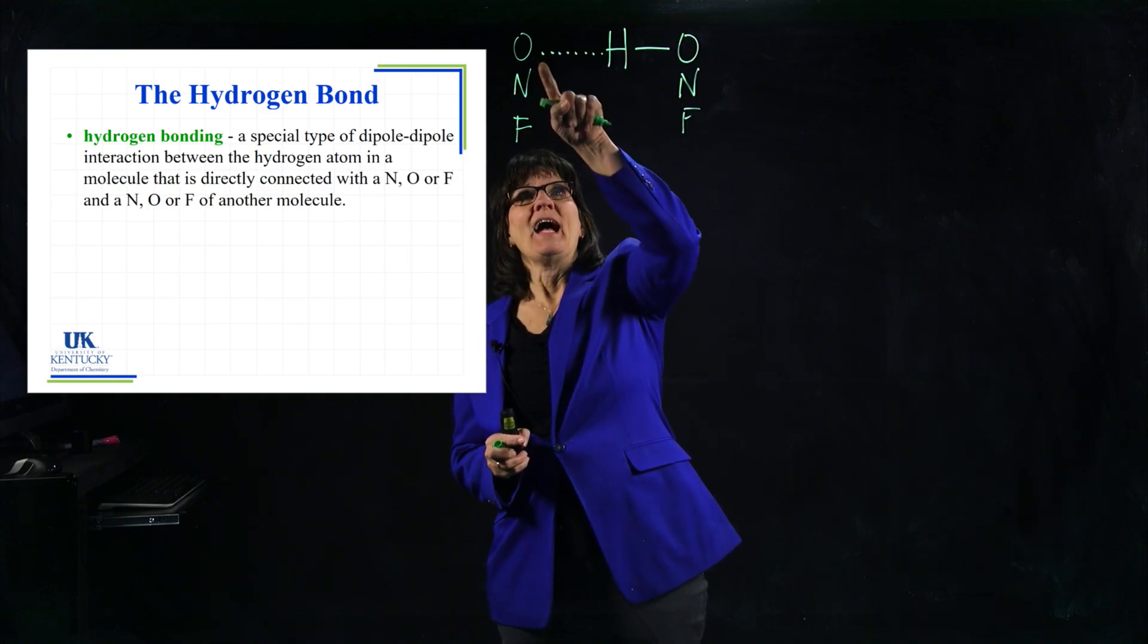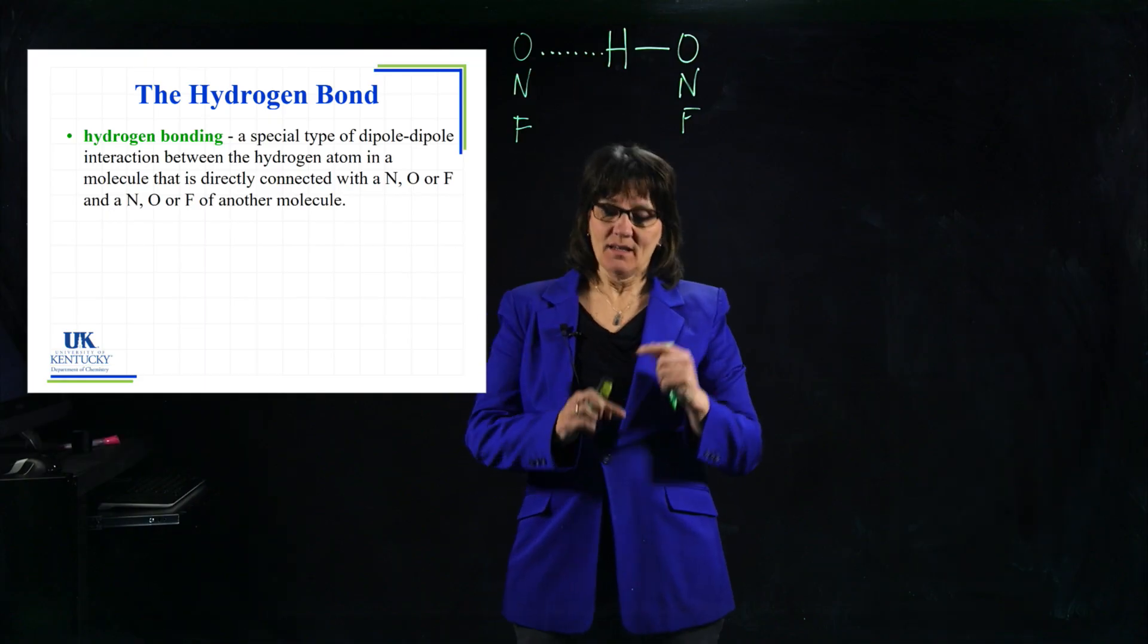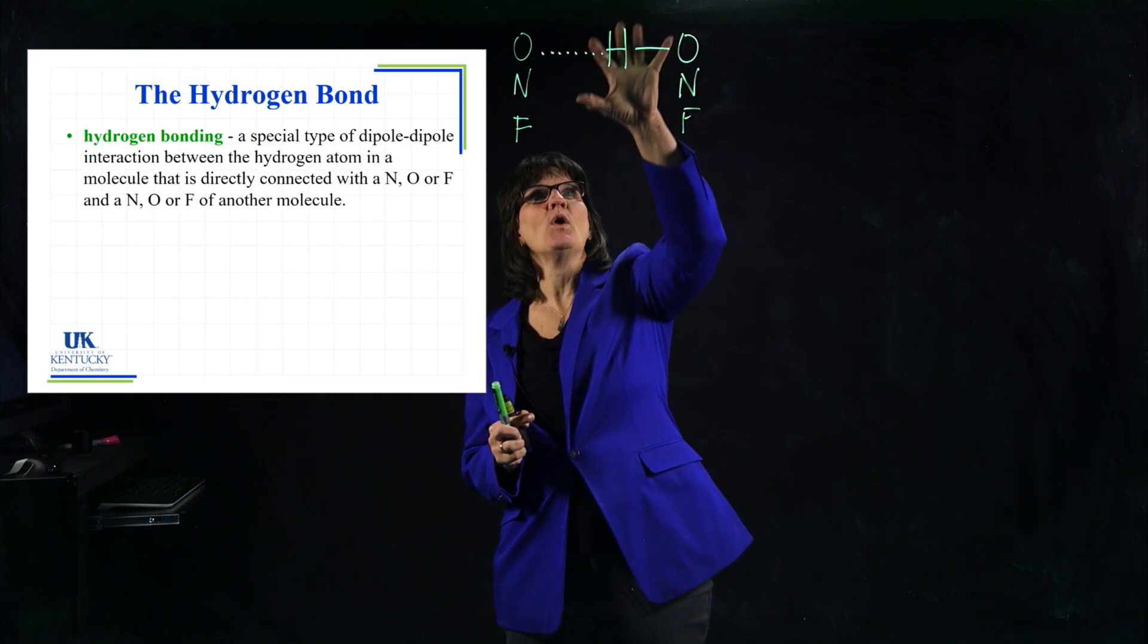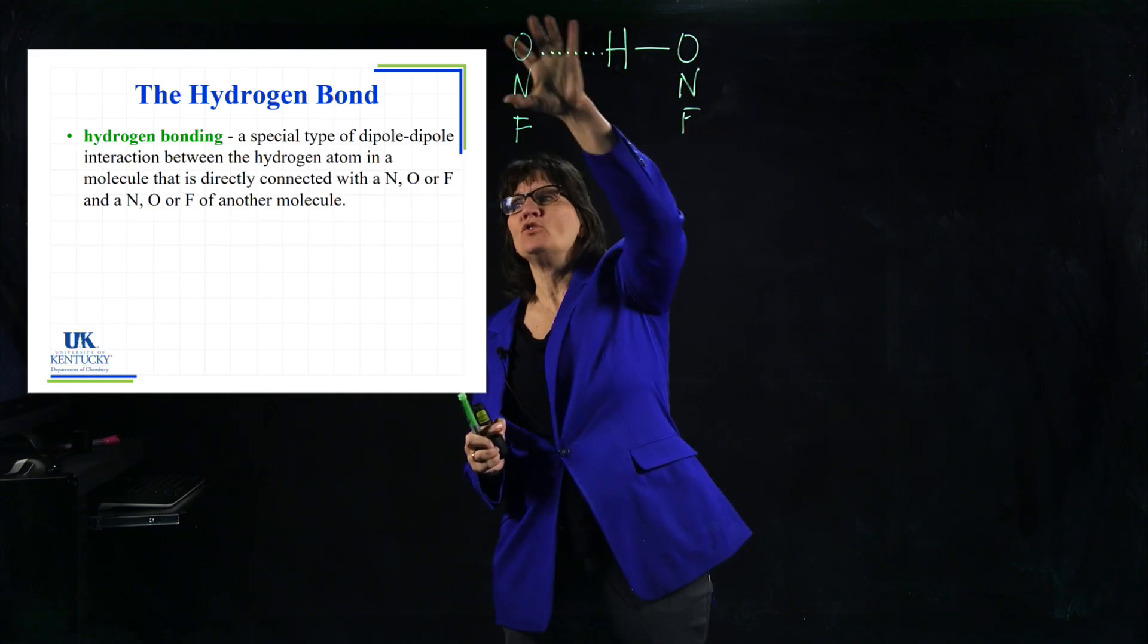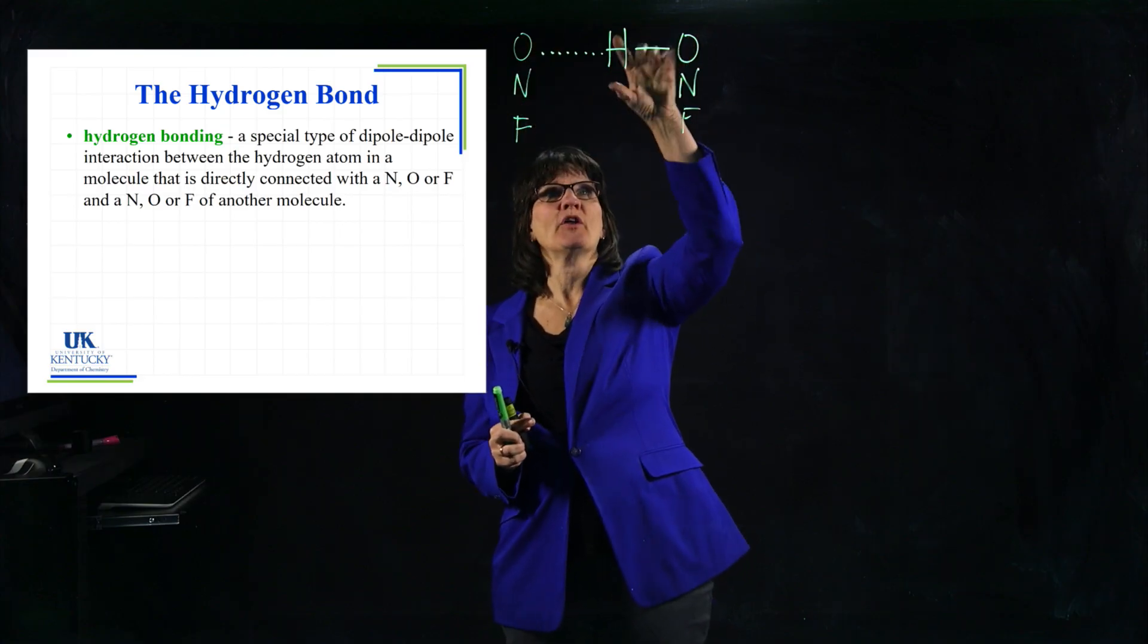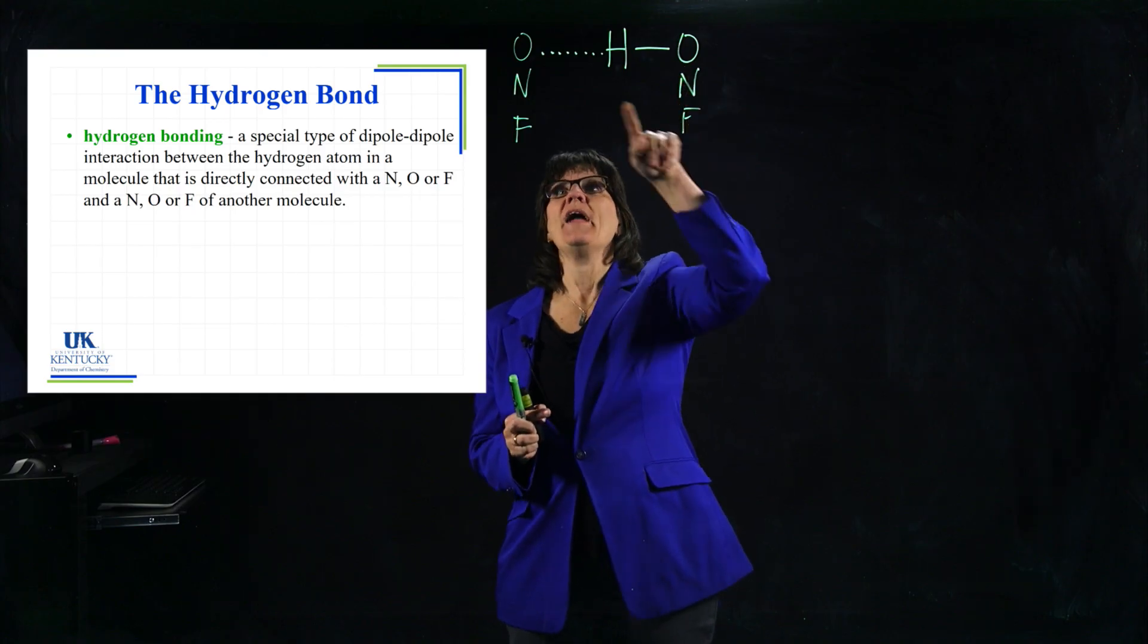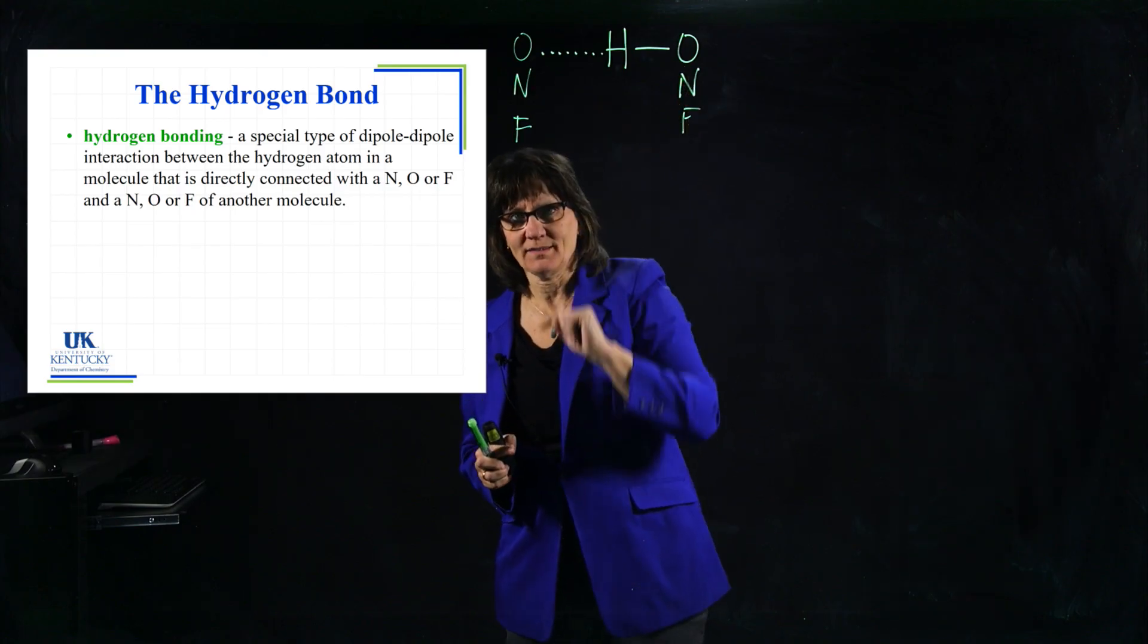This H and that guy, this dashed line is the hydrogen bond. It is an intermolecular attraction. So this is one molecule being attracted to another molecule. This molecule has to have H directly connected to one of these guys. And this molecule simply needs one of these guys.